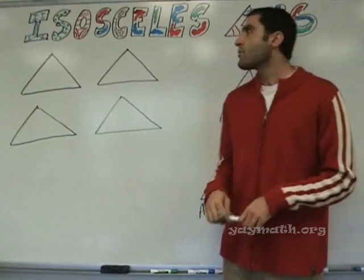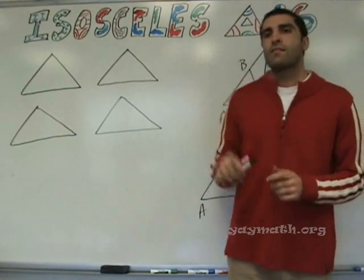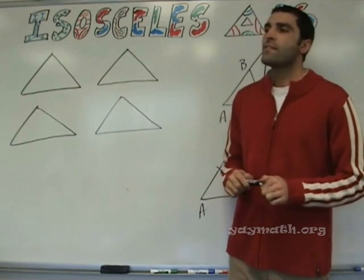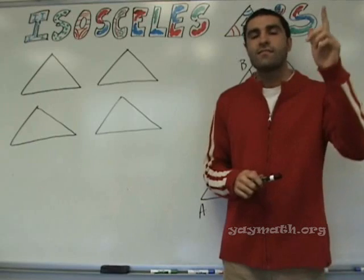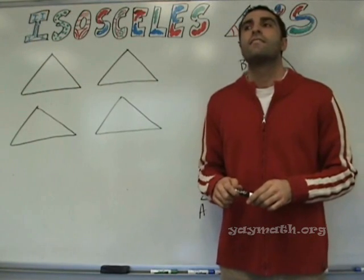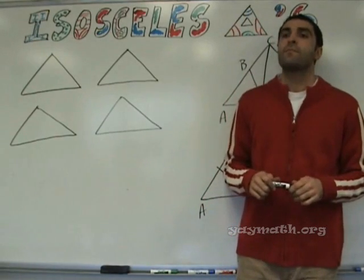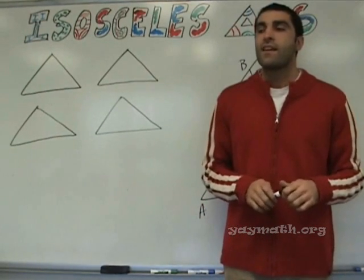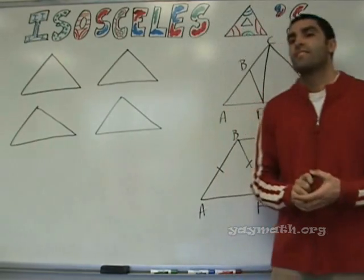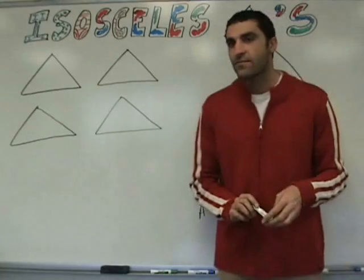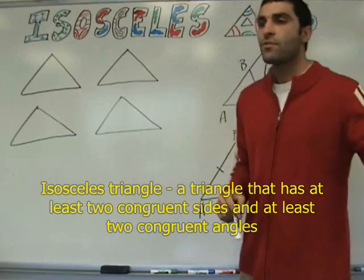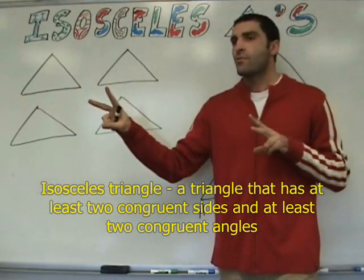Okay. We're going to go over the rules for isosceles triangles, spelled isosceles. And what is an isosceles triangle? Yes. An isosceles triangle is a triangle that has a minimum of two equal sides or angles. A minimum of two congruent sides. And what else? Angles. How many? Two or more. That's right. So, at least two congruent sides and at least two congruent angles.